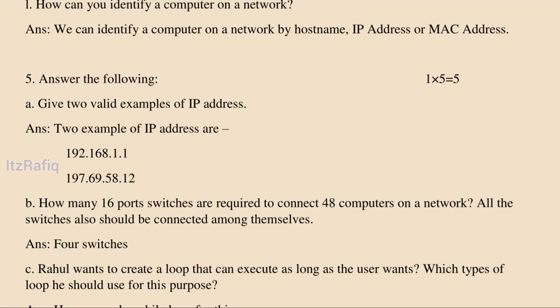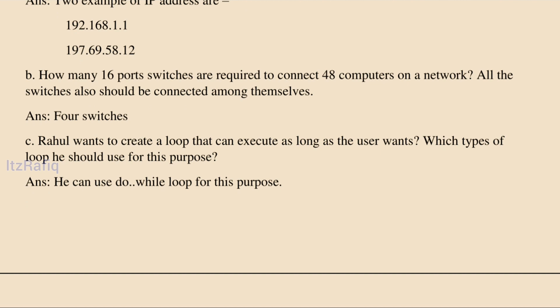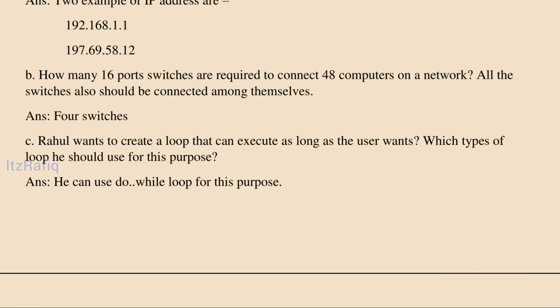How many 16-port switches are required to connect 48 computers, where all switches must also be connected to each other? There are 48 computers and the switches must interconnect. Switch 1 to switch 2 needs 2 ports reserved, and switch 2 to switch 3 needs another 2 ports — so 4 ports total are reserved for inter-switch connections. Total ports needed: 48 + 4 = 52. Dividing 52 by 16 gives 3.25, so we need 4 switches in total.